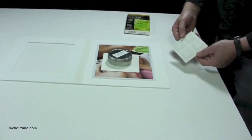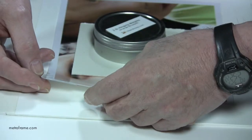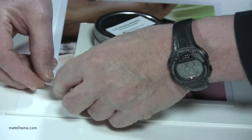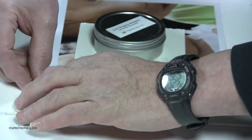We then take the mounting corners and slip it on the corner of the photograph. They are self-adhesive, so once you have inserted it on the corner, just press it down on the backing board.